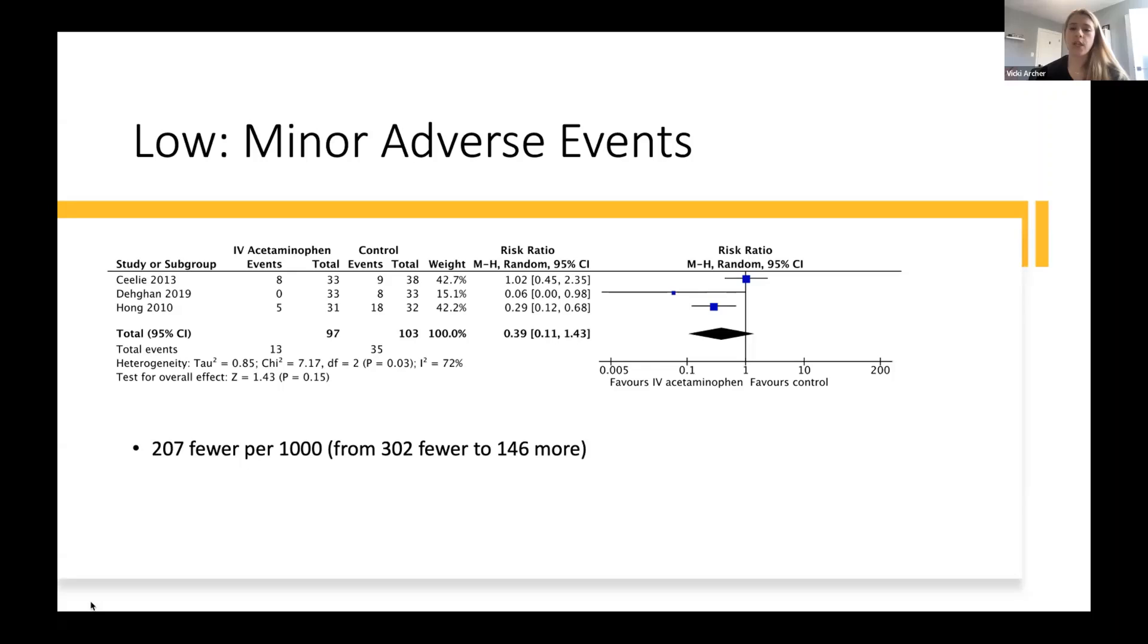The upper end of our confidence interval does cross a line of no difference, but does not include a clinically relevant harm. Once again, we have serious heterogeneity, decreased precision, and risk of bias, which rates down our evidence. However, the large effect size of 0.39% does increase our certainty in this evidence.